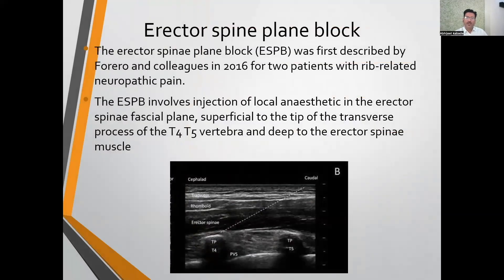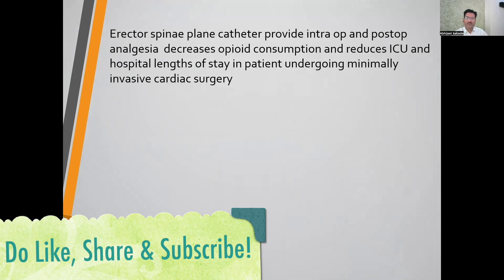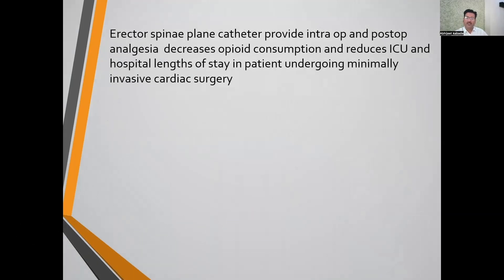The erector spinae block was first described by Forero and colleagues in 2016 for two patients with rib-related neuropathic pain. It involves injection of local anesthetic in the erector spinae fascial plane, superficial to the tip of the transverse process of T4 or T5 vertebra, deep to the erector spinae muscle. The erector spinae plane lies between the erector spinae muscle and the transverse process of the vertebra. Erector spinae plane catheters provide intraoperative and postoperative analgesia, decrease opioid consumption, reduce ICU stay and hospital length of stay in patients undergoing MICS.